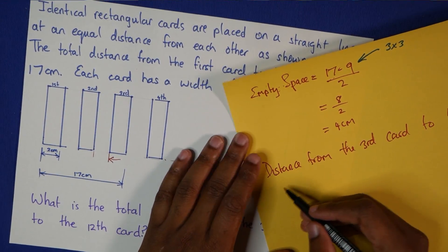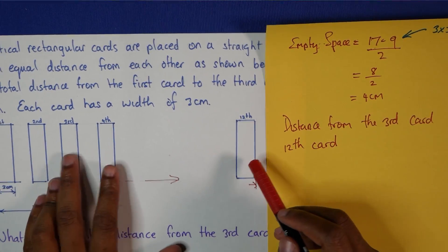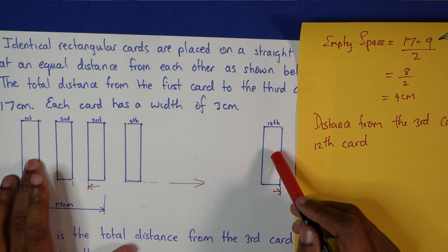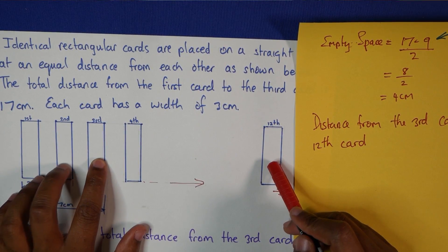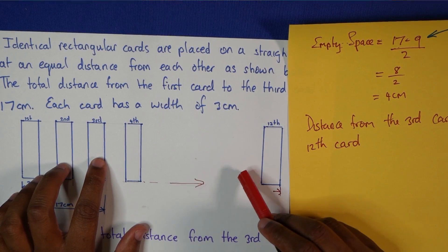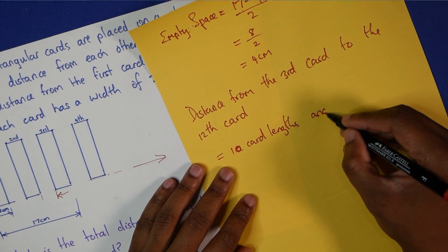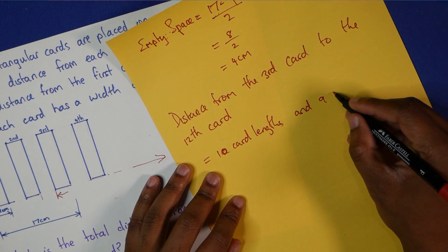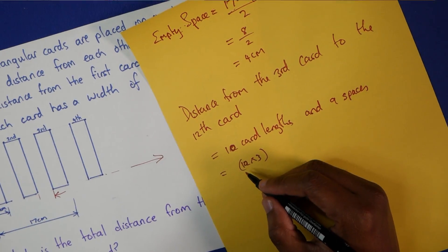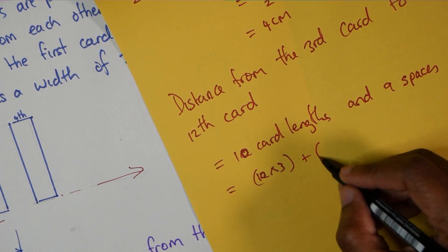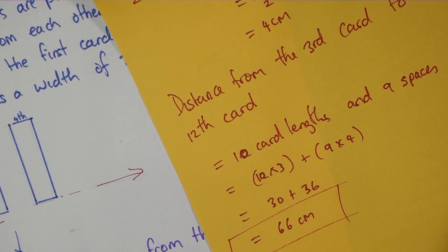Now the distance from the third card to the 12th card would actually involve 1 to 12 take away 2, which is 10 cards, and there'll be one less space. So 10 cards and 9 spaces, 9 empty spaces. This means 10 by 3 plus 9 by 4. This gives an answer of 66 centimeters.